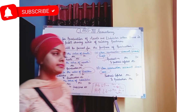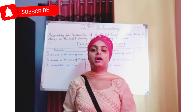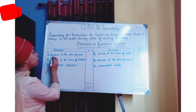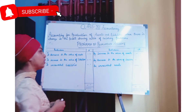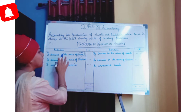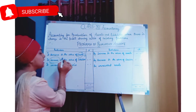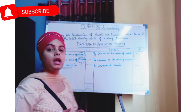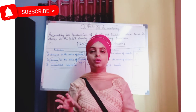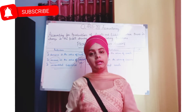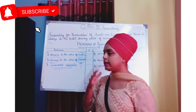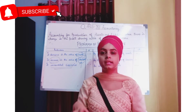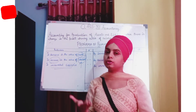Now we are going to read the pro forma of the Revaluation account. On the debit side, we record: decrease in the value of assets, increase in the value of liabilities, and unrecorded liabilities. The Revaluation account is a Nominal account — Debit all expenses and losses. When the value of assets decreases, it is a loss for the firm, so it goes on the debit side.